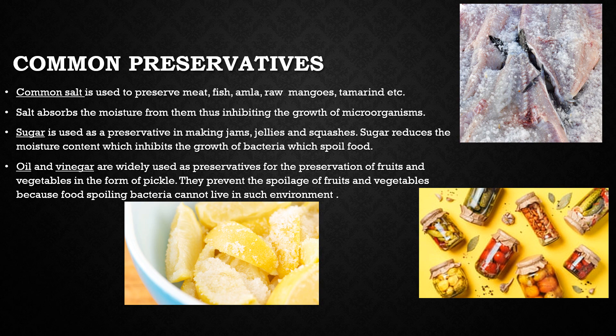Sugar is also used as a preservative in making jams and jellies from fruits. It reduces the moisture content from the fruits, which inhibits the growth of microorganisms like bacteria that spoil the food. Fruits can be preserved in the form of jams and jellies and stored safely for a long time. Fruits like apple, mango, orange, pineapple, etc. can be preserved in the form of jams and jellies by using sugar.